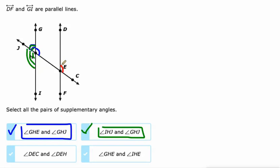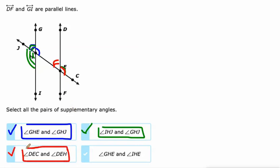DEC is this one, and DEH — yeah, for sure. DEC is congruent to this one, and DEH is congruent to GHJ. Those add up to 180 degrees, so those are supplementary. What about GHE and IHE? GHE is this one right here, and IHE is this one right here. Look at all of these — they're all supplementary. They all add up to 180 degrees and form straight lines with each other.